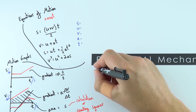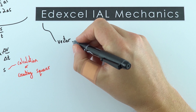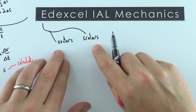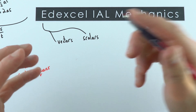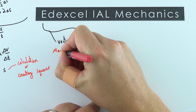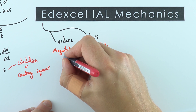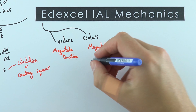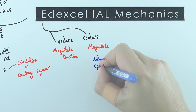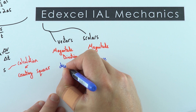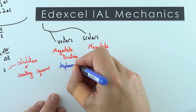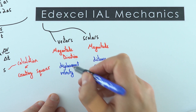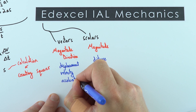These equations deal with vector quantities, so it's worth reminding ourselves about the difference between vectors and scalars. Both are quantities with a size — or magnitude. A scalar has a magnitude only, whereas for a vector, direction is important as well. Examples of scalars include distance and speed. Vector quantities include displacement, which is the distance moved in a certain direction; velocity, which is the rate of change of displacement; and acceleration.